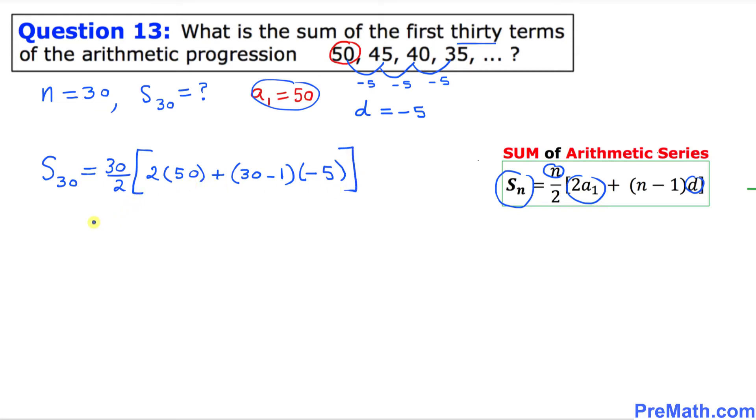Let's go ahead and simplify this one. 30 divided by 2 is going to be 15, and inside this bracket, 2 times 50 is 100 plus 30 take away 1 is 29 times negative 5.